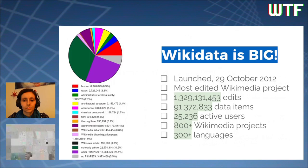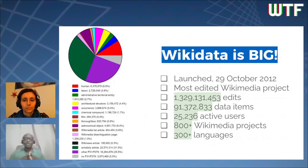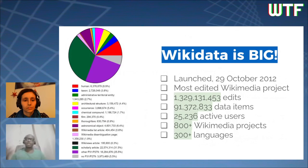There are more than 25,000 active editors — people who make at least one edit every month. Wikidata is used across 800 plus Wikimedia projects in more than 300 languages. And it's interesting to note that the largest proportion of Wikidata's items are in the category of scholarly items, comprising about 30% of the whole.